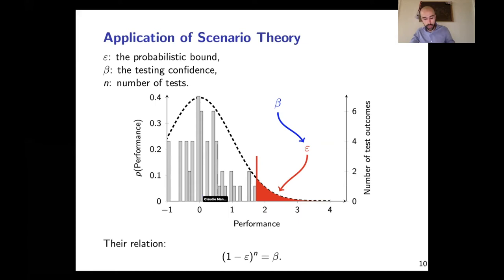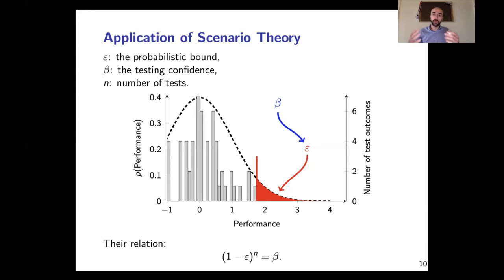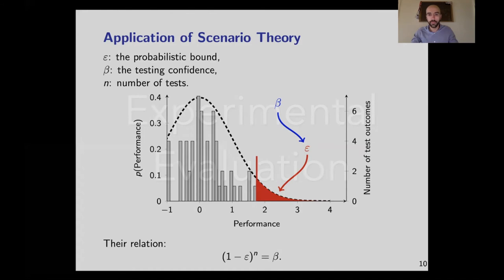Let me remark that in this picture, where we have the bars representing test cases and the dashed line representing the ideal distribution of our performance, the dashed line is not known. So in the real-world case, we will not have the dashed line — we will just have the bars. Scenario theory will allow us to estimate the area that represents the probability of observing something worse than the worst case observed in our test cases. Moreover, the testing confidence beta allows us to state whether we can be confident enough in the result, and so whether we need to carry more tests or not.